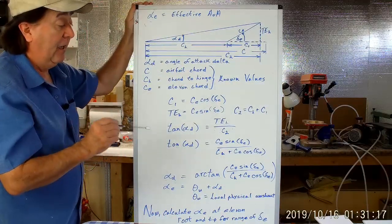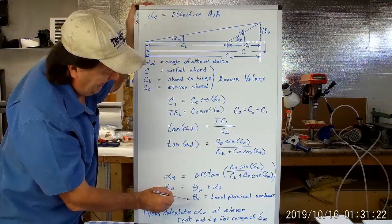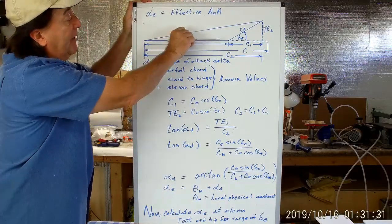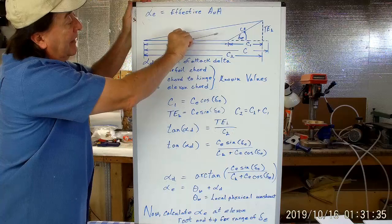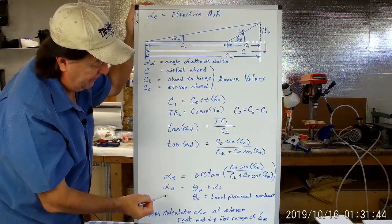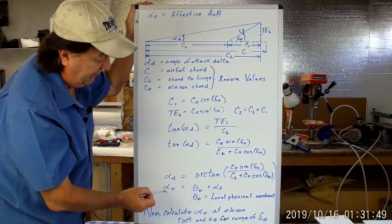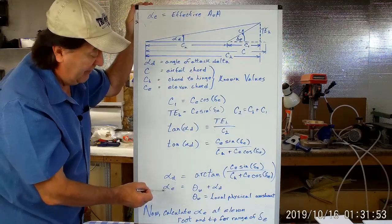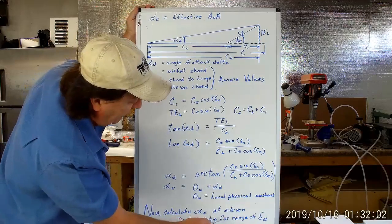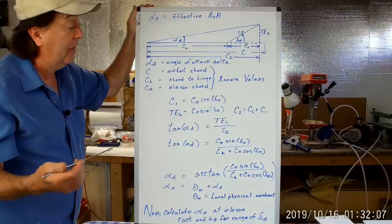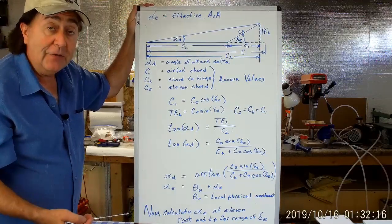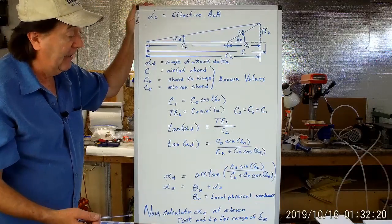Alpha sub E — the effective angle of attack — equals theta sub W plus alpha sub D. Theta sub W is the local physical washout: at the root end of the elevon you know the washout in the wing, and you add that washout to the relative change in angle. The wing may already be washed out, and alpha sub D adds even more. This gives us alpha sub E — the total value. We want this for a series of elevon deflections at both the root end and tip end of the elevon. In the next segment, I'll boot up the spreadsheet and walk you through it.